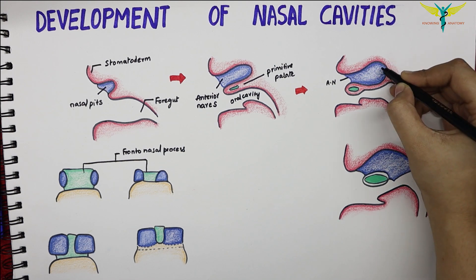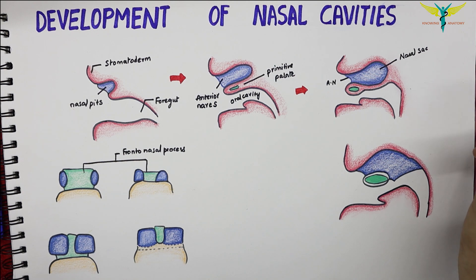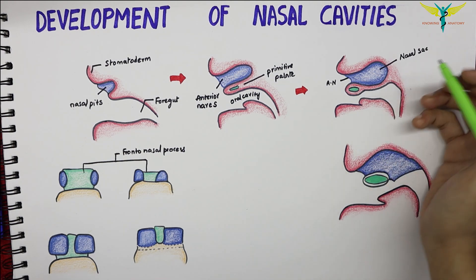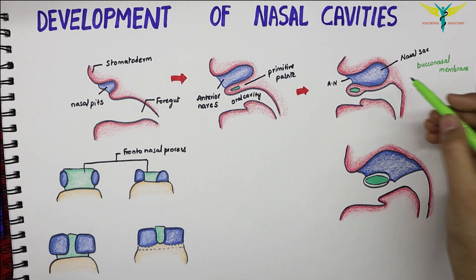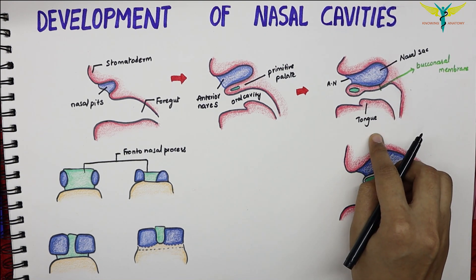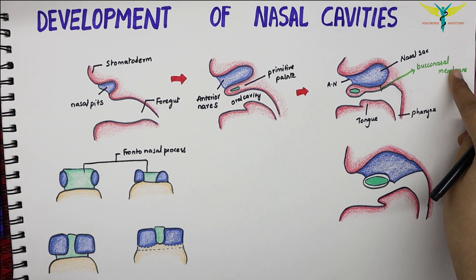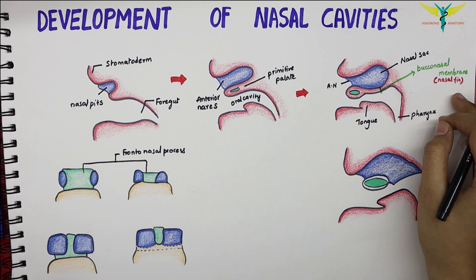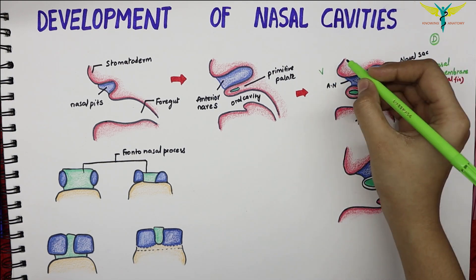The nasal pits deepen down to form the nasal sacs. The anterior nares deepen to form the nasal sac, which expands both dorsally and caudally. The dorsal part of the sac is at first separated from the stomatodeum by a thin membrane called the bucconasal membrane, also known as the nasal fin. This bucconasal membrane soon breaks down.